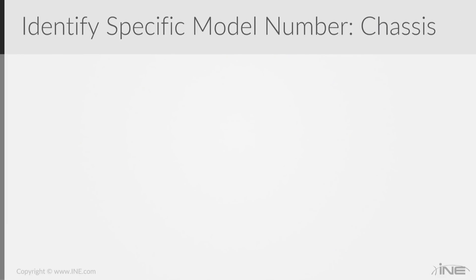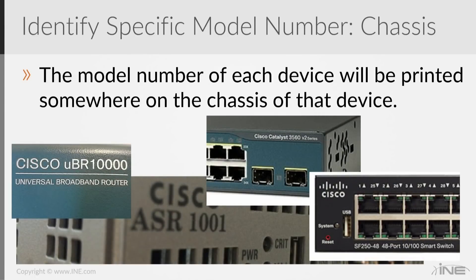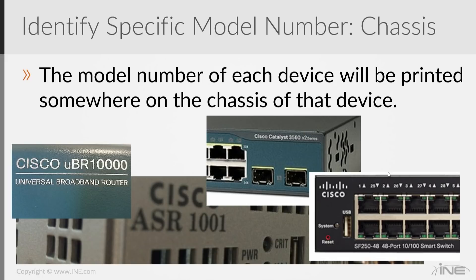Now that I've identified my Cisco device, how do I identify what specific model it is? Once again, look at the chassis. The model number should be printed somewhere on the chassis of that device. Just by looking closely enough, you should see — for example, we see a Catalyst 3560 printed on this particular model. Here we have a Cisco ASR 1001. Here we have a UBR 10,000. So somewhere on the chassis it'll be marked what that device is.